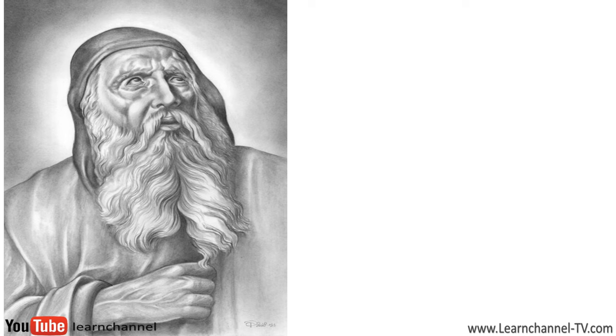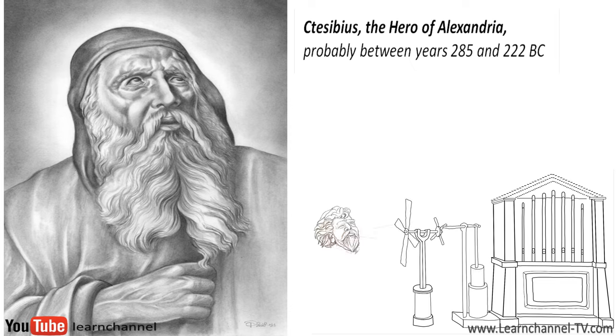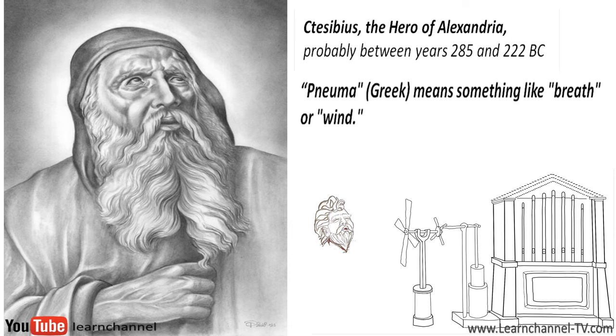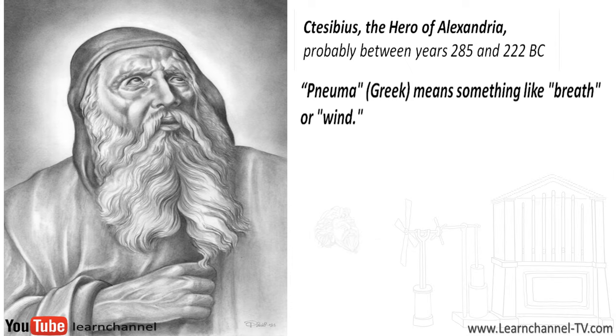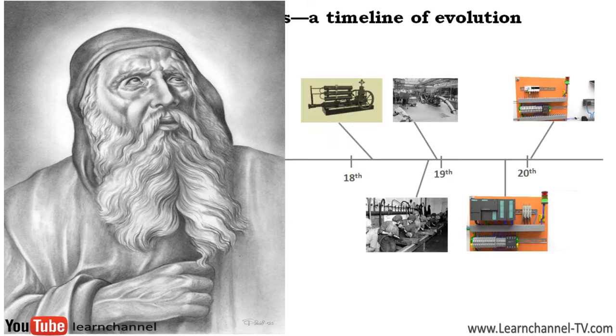The origins of pneumatics can be traced back to the first century when a Greek mathematician and inventor simply known as the Hero of Alexandria created what we can call the first pneumatic tools. Despite their rudimentary design, many of these tools laid the foundation for pneumatics as we know them today. From this time, pneumatics got its name. The term pneumatics is derived from the ancient Greek word pneuma and means something like breath or wind, so pneumatics can be seen as a branch of engineering that makes use of gas or pressurized air.